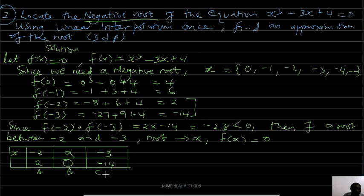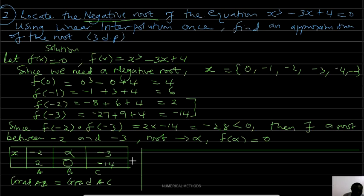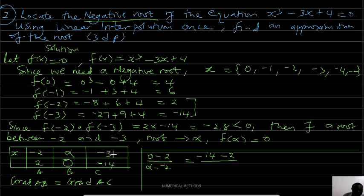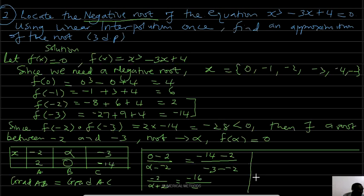Using linear interpolation, gradient AB = gradient AC: (0 - 2) / (alpha - (-2)) = (-14 - 2) / (-3 - (-2)), which gives -2 / (alpha + 2) = -16 / -1. Cross multiplying and solving, alpha = -2.125. That is the root using linear interpolation once.